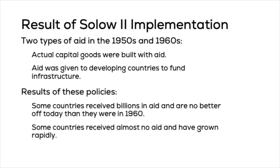However, this model makes it more difficult to apply policy to grow the economy. Policymakers have to rely on luck or technology being provided from outside. This actually influenced the development policies of the 1950s and 1960s, where two types of aid were used: actual capital goods were built with aid, and aid was given to developing countries to fund infrastructure and purchase technology improvements. As a result, some countries received billions in aid and are sadly no better off today than they were in 1960, while some countries received almost no aid and have grown rapidly.